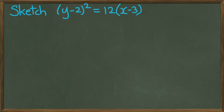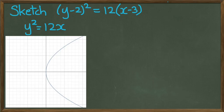So this example, I'd like to sketch y minus 2 squared equals 12 times x minus 3. What I'm going to do is go back to the previous graph, which was y squared equals 12x, and that's what this graph looks like.